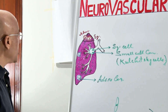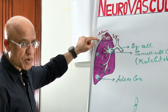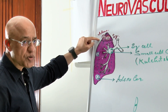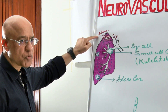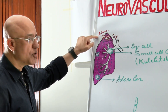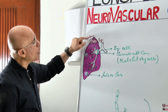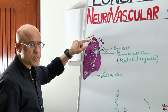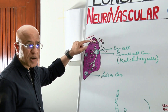Traditionally, squamous cell carcinoma was considered the most common Pancoast tumour — it was the most common histopathological variant in the apex of the lung. But these days, adenocarcinoma's incidence is increasing, and in many parts of the world, adenocarcinoma is now the most common carcinoma in the apical region. Whether it is adenocarcinoma, squamous cell carcinoma, or even large cell carcinoma, all of them are labelled as Pancoast tumour.